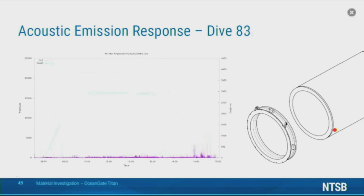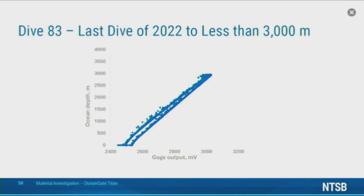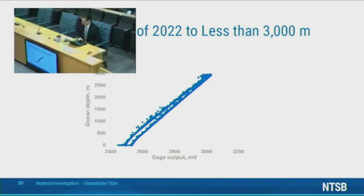And here for dive 83. One note about dive 83: this dive did not take place at the Titanic wreck site and did not go to the same depth as the other dives. According to the dive log, it reached a depth of 2,954 meters. This is the last dive for which acoustic emission and strain data is available.